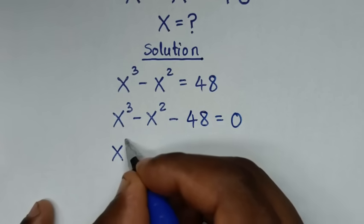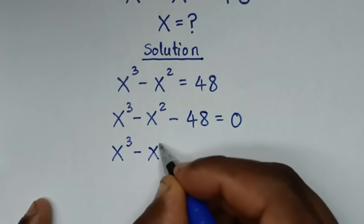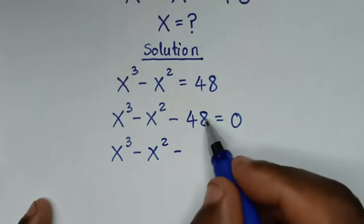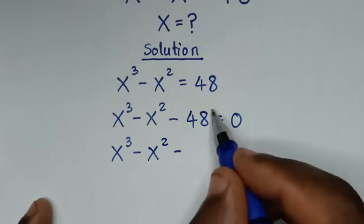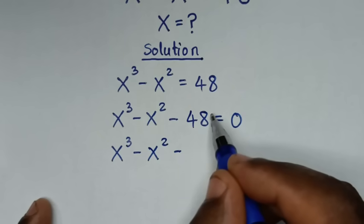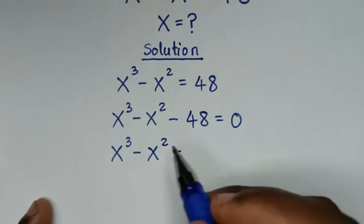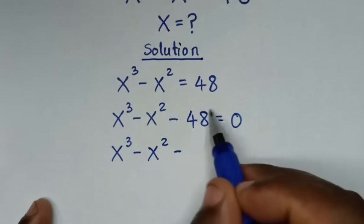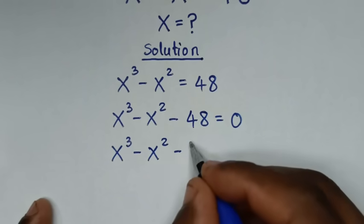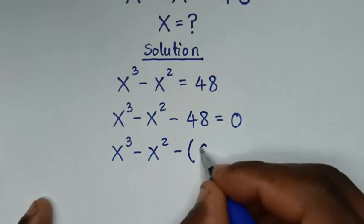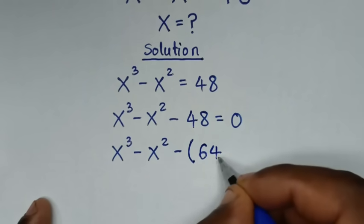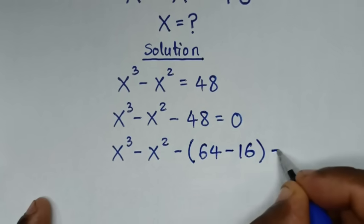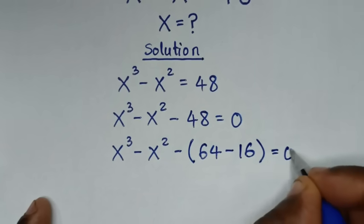We make the equation have exponents with powers of 3 and power 2, so 48 is the same as (64 minus 16), giving x³ minus x² minus (64 minus 16) is equal to 0.